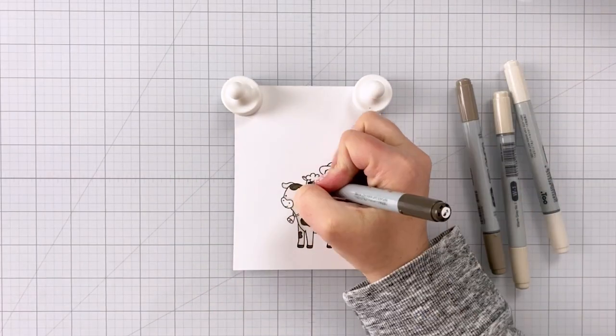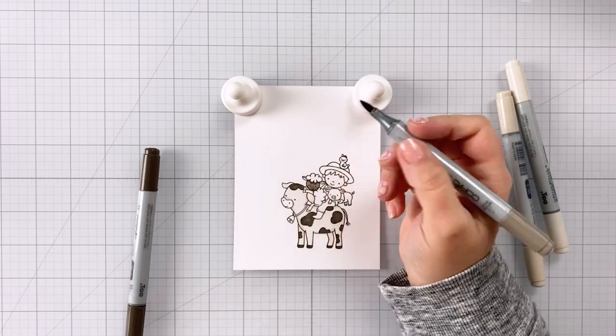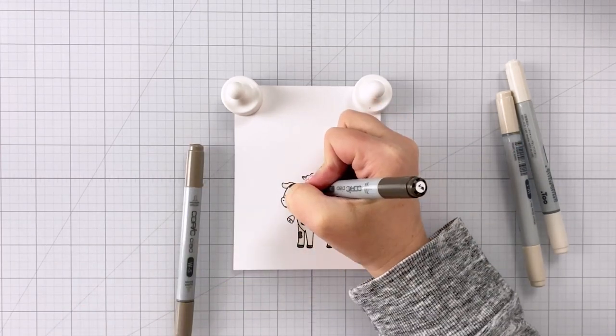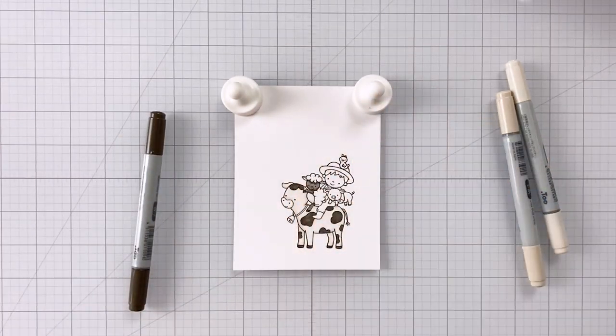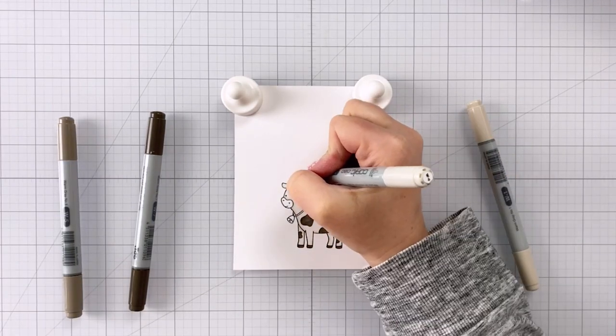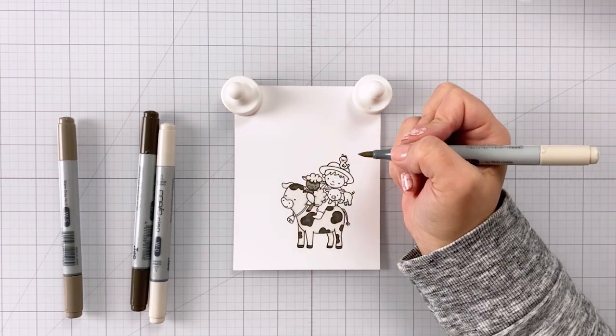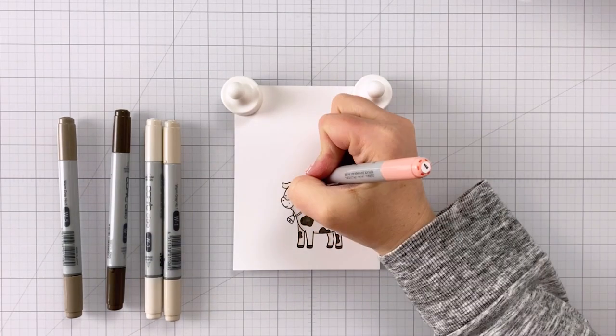Once I get my cow nice and colored and shaded, I'm going to come in here with my little sheep and I'm using W5, W7, W0, and W1. And then I'm using some R11 to color in, I believe the nose.